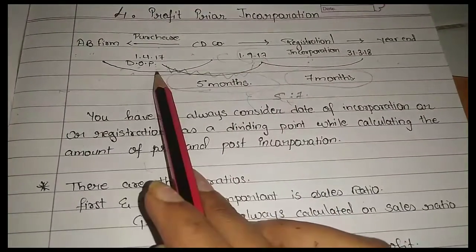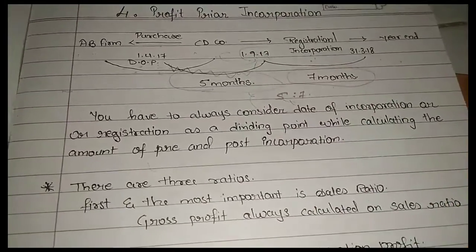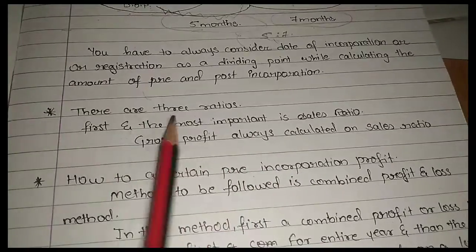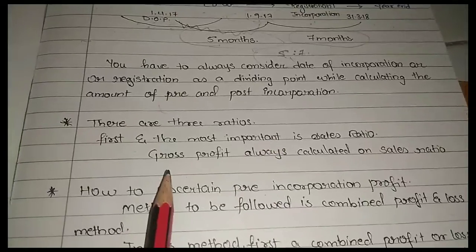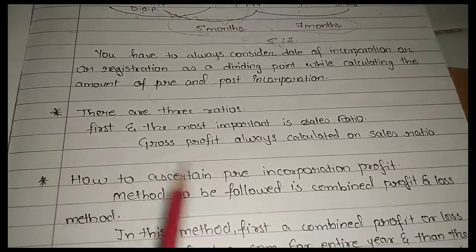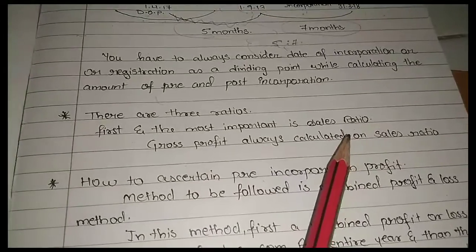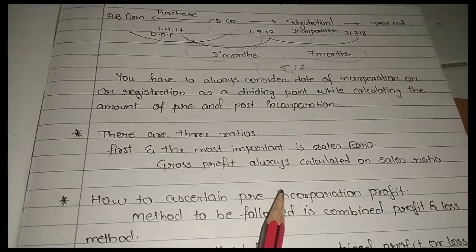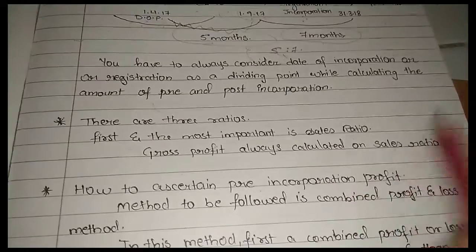The dividing point while calculating the amount of pre and post incorporation. What was our base here? 5 months here and 7 months. There are three ratios.